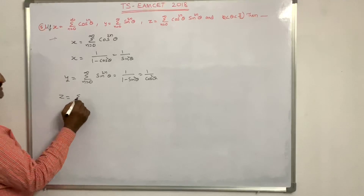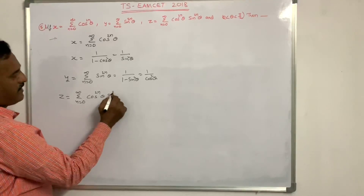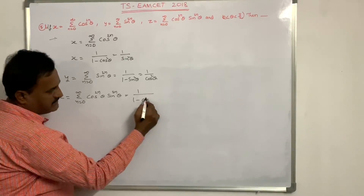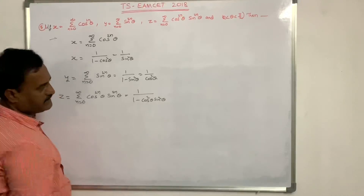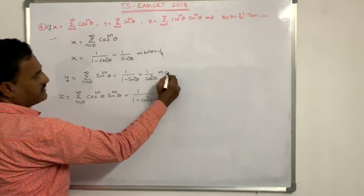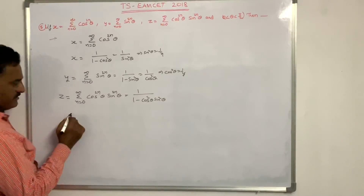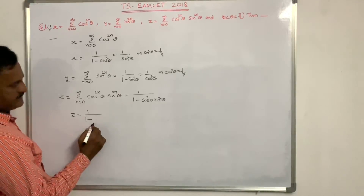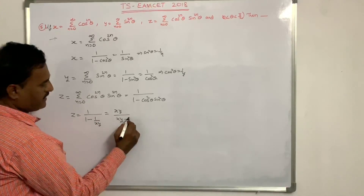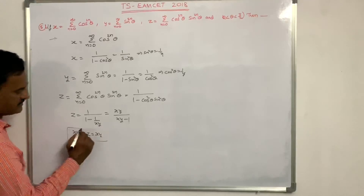Similarly y equals sigma from n equals 0 to infinity of cos to the power 2n theta equals 1 by cos squared theta. And z equals sigma of cos to the power 2n theta times sin to the power 2n theta, which is an infinite geometric series equal to 1 by 1 minus cos squared theta times sin squared theta. From these: sin squared theta equals 1 by x and cos squared theta equals 1 by y. Substituting gives z equals 1 by 1 minus 1 by xy, that is xy by xy minus 1, so xyz minus z equals xy.